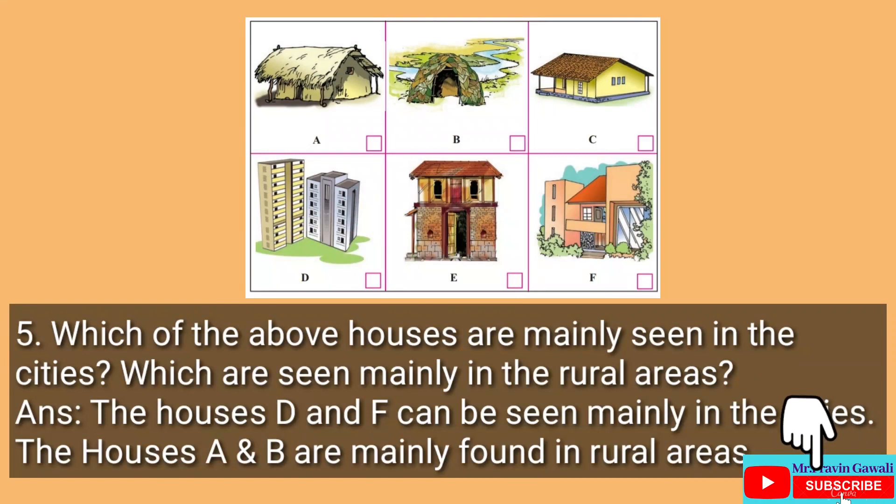Fifth question: Which of the above houses are mainly seen in cities, and which are seen mainly in rural areas? The answer is: houses D and F can be seen mainly in the cities, and houses A and B are mainly found in rural areas.